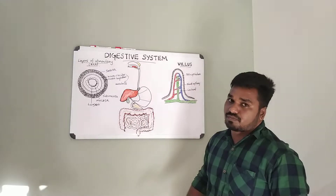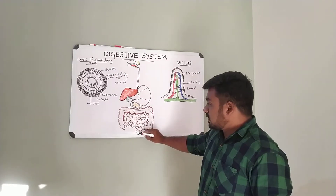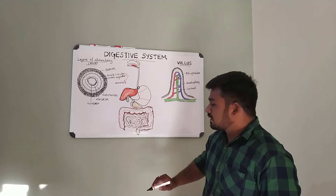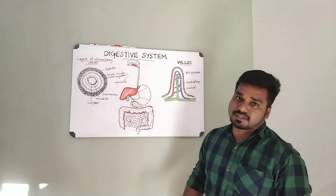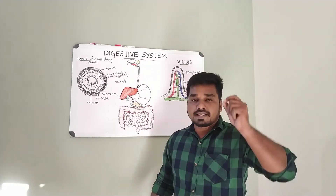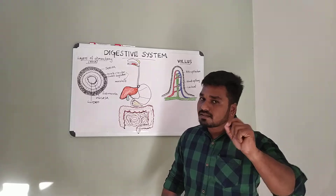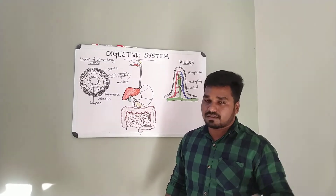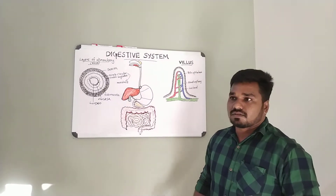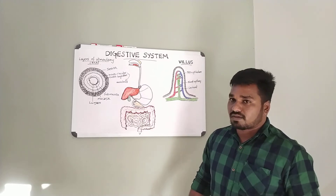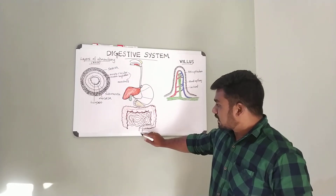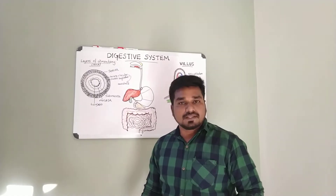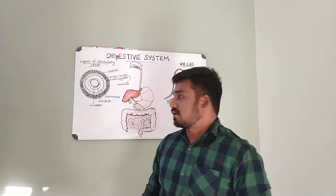The rectum ends at the anal canal, which has an internal anal sphincter made of smooth muscle under involuntary control, and an external anal sphincter made of skeletal muscle under voluntary control.